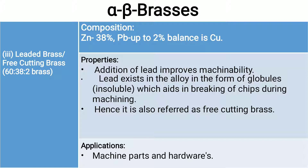The third type is leaded brass or free-cutting brass, which is 60-38-2 brass with 38% zinc, 2% lead, and balance copper. The addition of lead improves the machinability of this brass, and it is generally called free-cutting brass. Basic applications are machine parts and hardware parts.